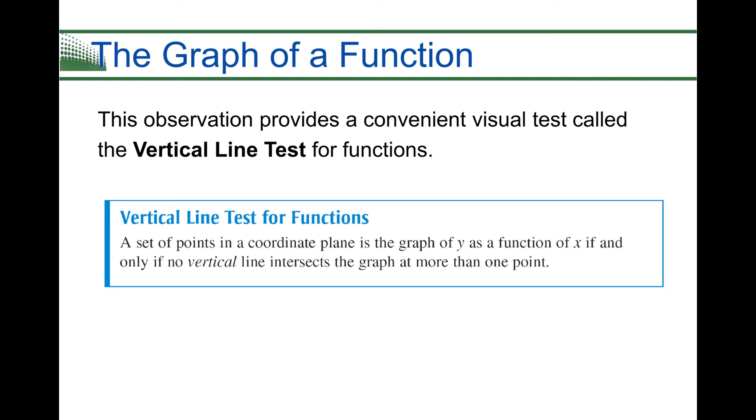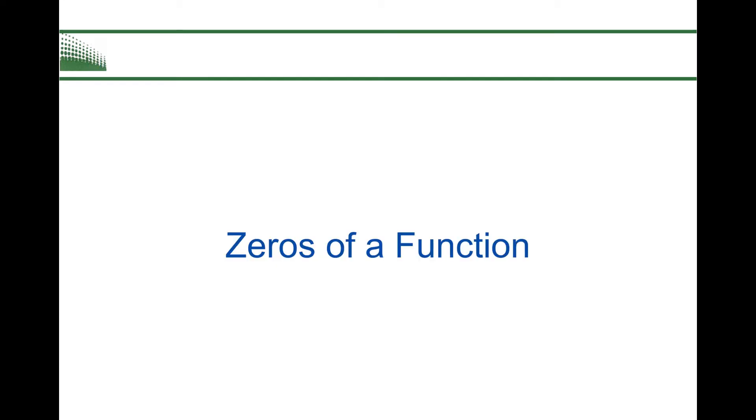We've already talked about this in a previous lecture, and this is called your vertical line test. So your book notes it here in a nice blue box. It says a set of points in a coordinate plane is the graph of y as a function of x if and only if no vertical line intersects the graph at more than one point. So we've already looked at this once, but let's reevaluate this again now that we're analyzing graphs.